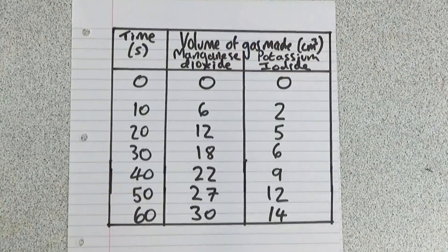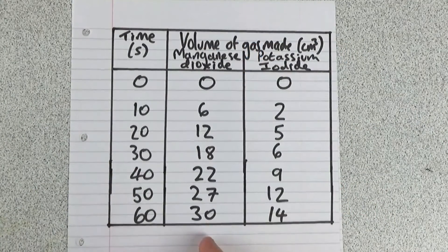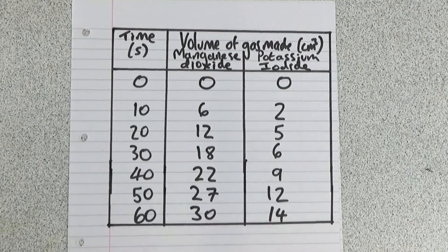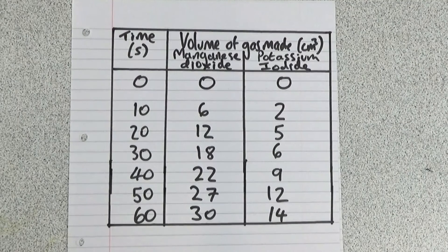So I've put my results into a table. This is the volume of gas made with the manganese dioxide, this is the volume of gas made with the potassium iodide, and we can see quite clearly that the manganese dioxide speeded up the reaction much more than the potassium iodide.